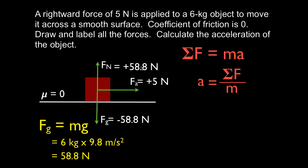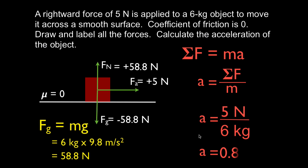You can see that the normal and gravity cancel each other out: plus 58.8 minus 58.8. So we're calculating acceleration in the x-direction. The only force we have is 5 Newtons, and the mass is 6 kilograms. Dividing those two gives us an acceleration of 0.83 meters per second squared. Meters per second squared are the units for acceleration — a Newton is a kilogram times a meter per second squared, so the kilograms cancel and we're left with meters per second squared.